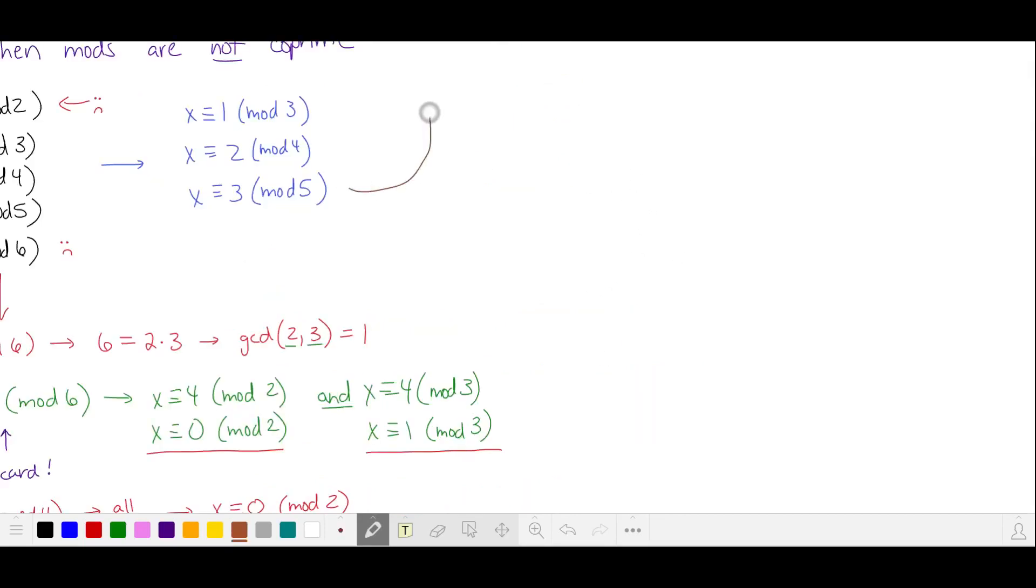As a reminder, we can solve this by taking our last equivalence and translating it into an equation, where x is three more than a multiple of five. We'll substitute this into our second equivalence and simplify. So a is three more than a multiple of four. And we substitute in for x. x is 20b plus 18.